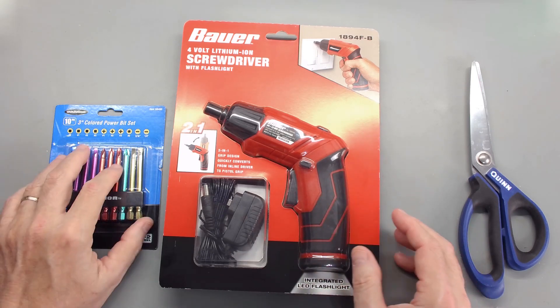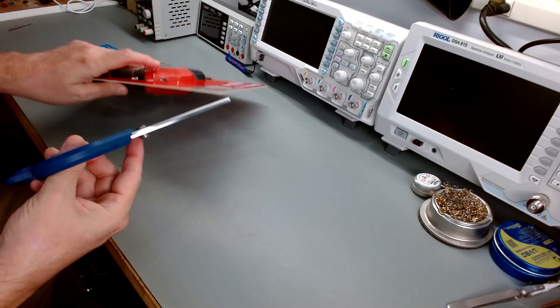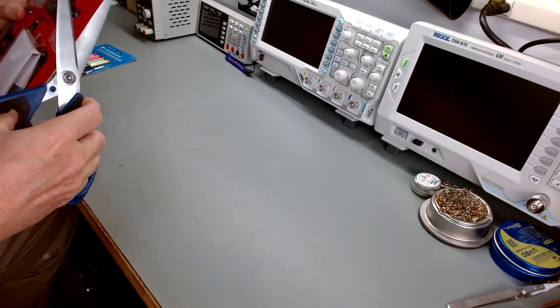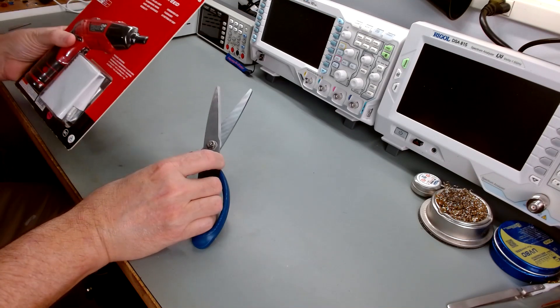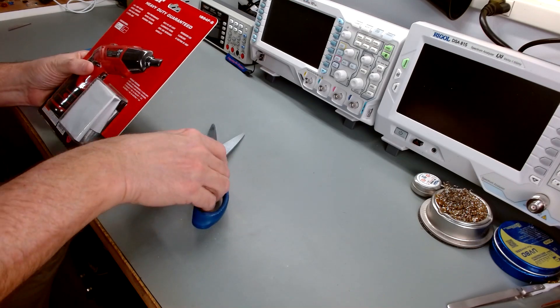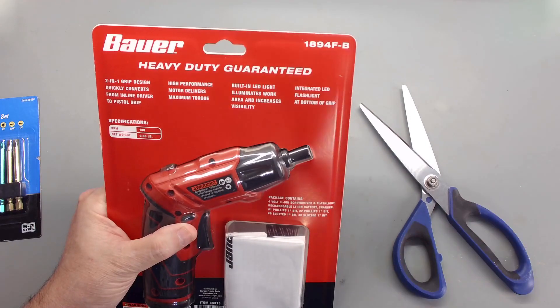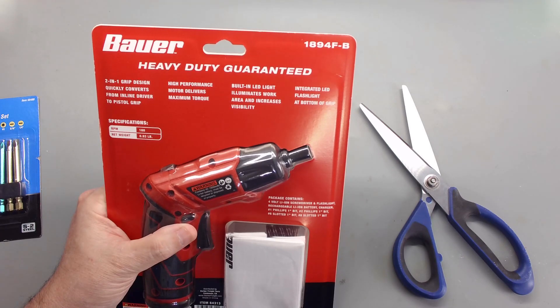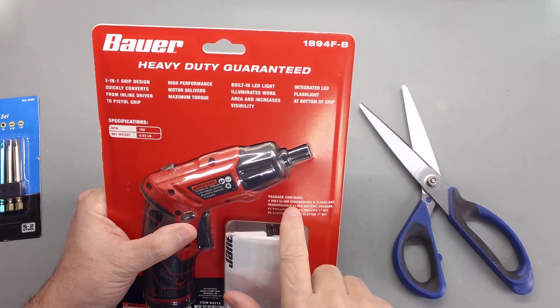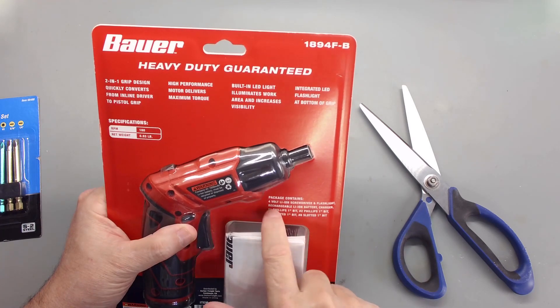So let's take a look at what we ended up with. Okay, so we'll get our scissors out. This is a Bauer heavy-duty electric screwdriver, two-in-one grip design, supposed to have 180 RPMs. It's supposed to weigh 0.93 pounds. It comes with four volt lithium ion screwdriver and flashlight, also has a flashlight built in, rechargeable ion battery charger.